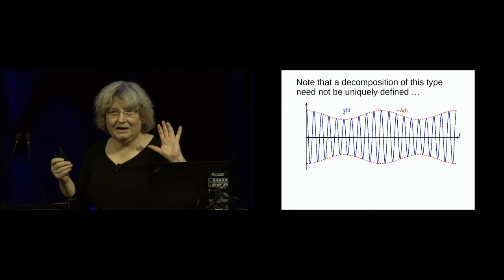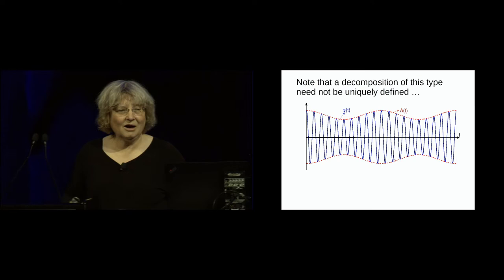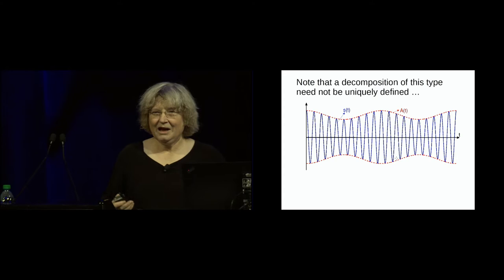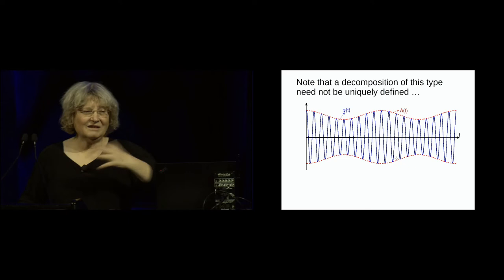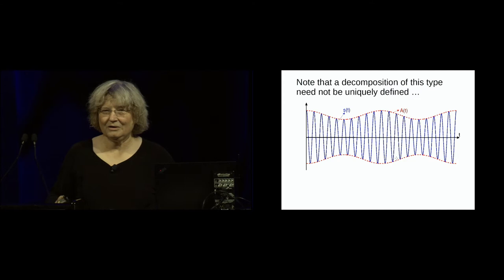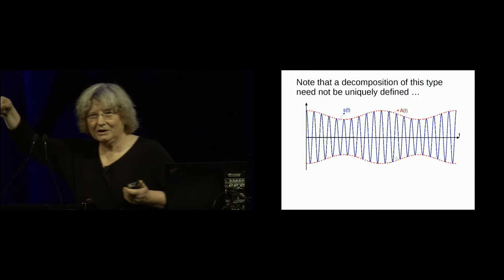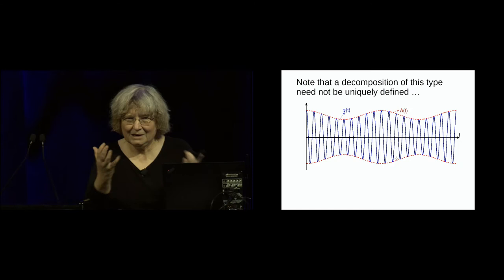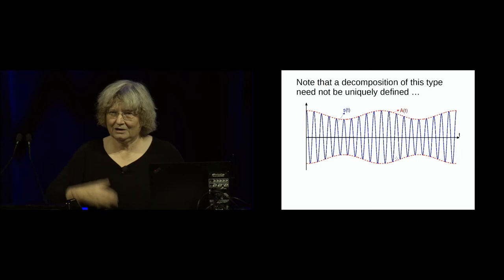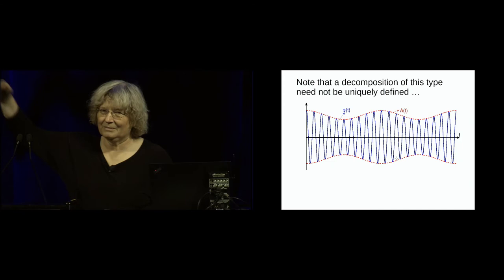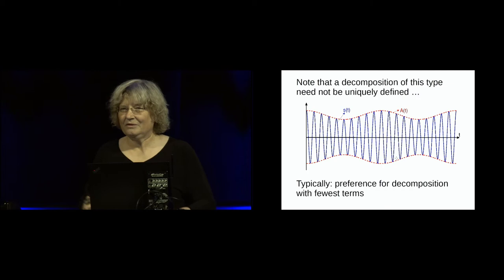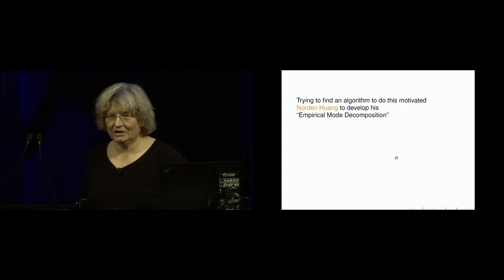Now, this decomposition is not fully general and not even completely unique. Here you see the sum of three different pure harmonics — three different cosines — that, because of beating, give you an envelope. You can describe this as a single cosine with a time-changing envelope, or as a sum of three different ones with constant amplitudes. I'm not claiming that for every f in L², there exists a unique decomposition — that's just not true. I'm looking at things that are already of a certain type. We have a preference for decompositions with the fewest terms.